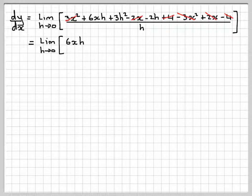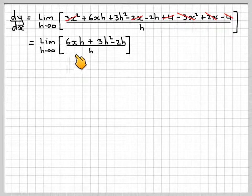So writing what's left, limit as h goes to 0 of 6xh plus 3h squared minus 2h, over h.